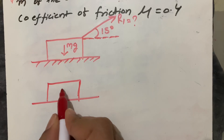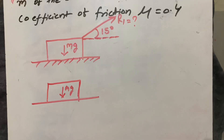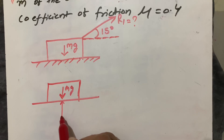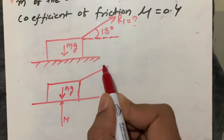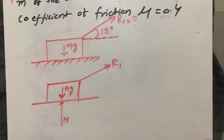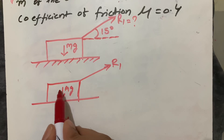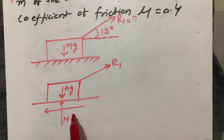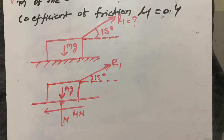The free body diagram shows the wooden block resting on the horizontal floor with mass 5 kg acting downward. The opposite reaction is also there, that is the normal reaction N. R1 is the pulling force applied in this direction, so this block moves forward and the opposing friction force μN acts opposite. The angle is 15 degrees.